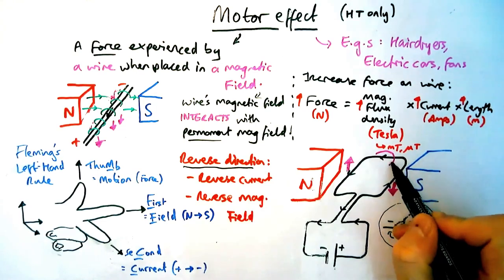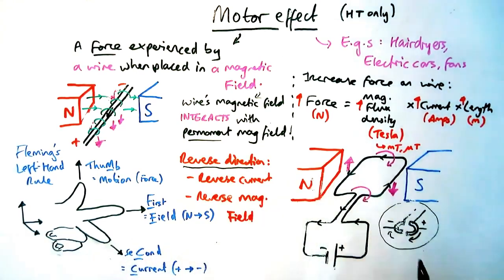On the other side we flip the current round and so the force flips, so we've got one going up one going down, it's going to rotate from our point of view in a clockwise direction.